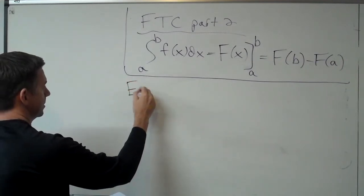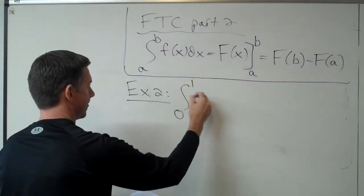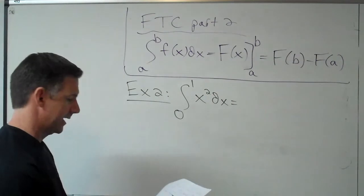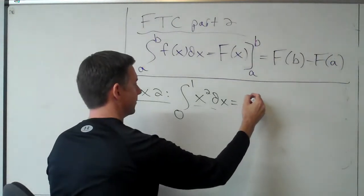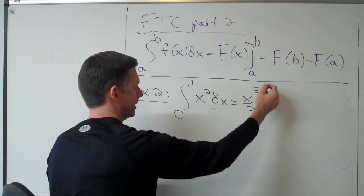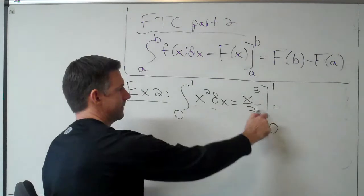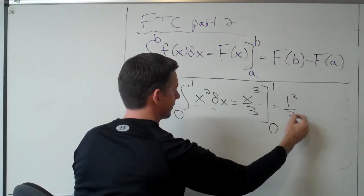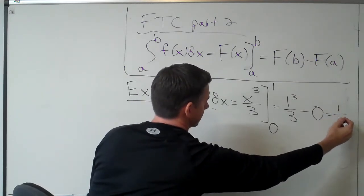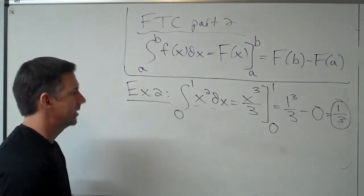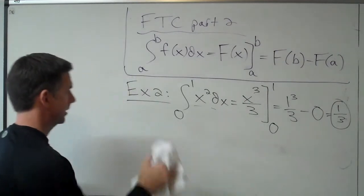Example two: we do the anti-derivative of x squared, or we evaluate this integral. We find the anti-derivative by adding one to the exponent and dividing by three. We find it from zero to one. You plug in the one: that's one cubed over three minus zero over three, or zero. So we get an answer of one-third. That's the area under the curve from zero to one of the function x squared.